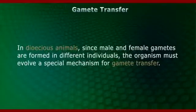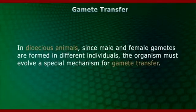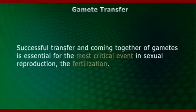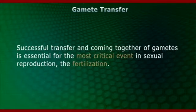In dioecious animals, since male and female gametes are formed in different individuals, the organism must evolve a special mechanism for gamete transfer. Successful transfer and coming together of gametes is essential for the most critical event in sexual reproduction: fertilization.